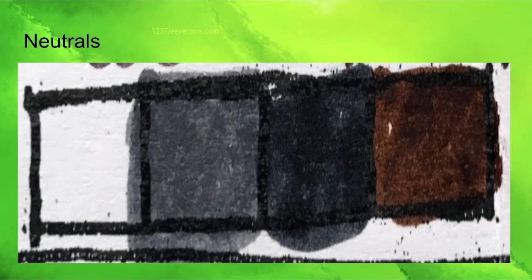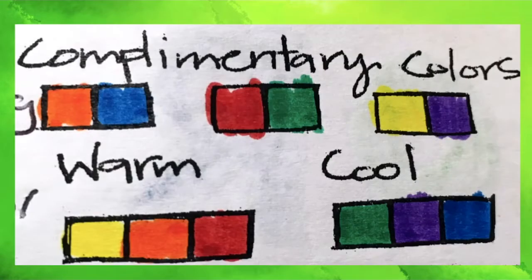Then we have neutrals. Neutrals are like white, gray, black, and brown. Then you can look at complementary colors, colors that complement and contrast each other.